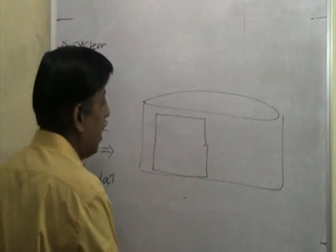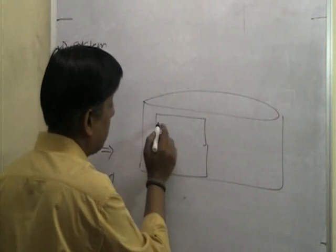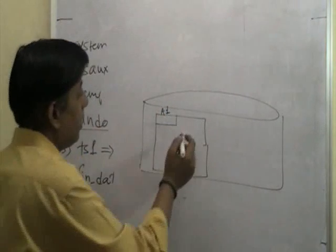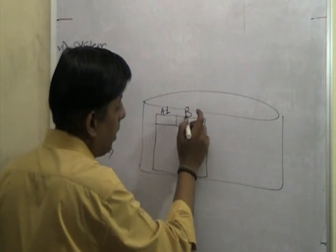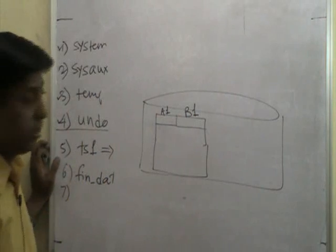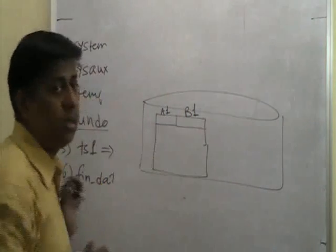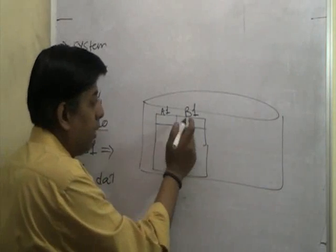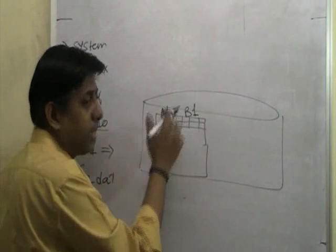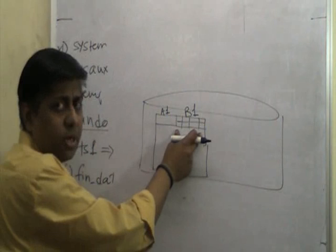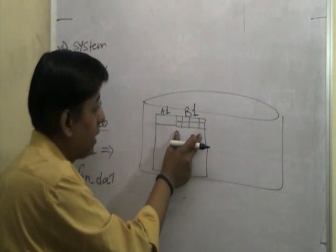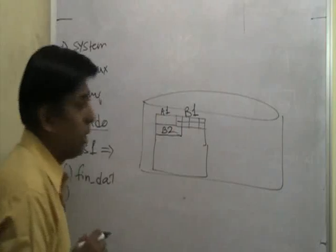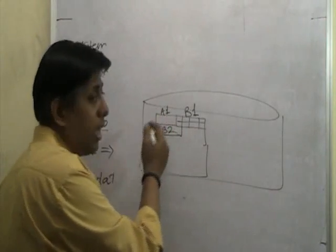Inside the tablespace there is a first extent - let's say I created table A, so this is extent A1. Then I have table B and the first extent of table B is here, because I created table A first, then table B. Now somebody is inserting a huge amount of data into table B, so that extent is full. Oracle automatically allocates the next extent for table B - we don't do any allocation, it all happens automatically behind the scenes.